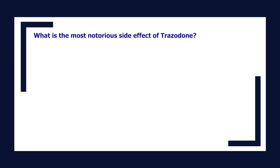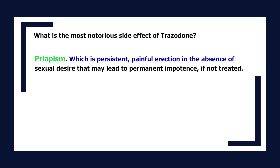What is the most notorious side effect of trazodone? Priapism — a persistent, painful erection in the absence of sexual desire that may lead to permanent impotence if not treated.